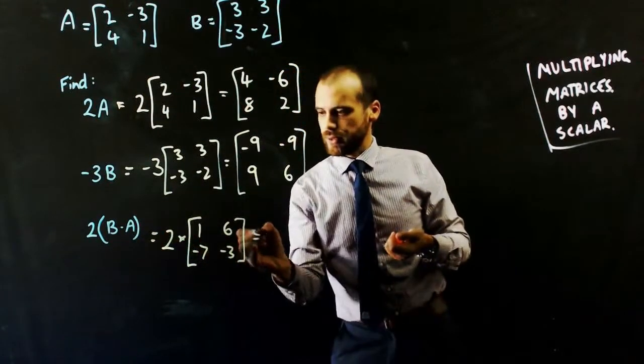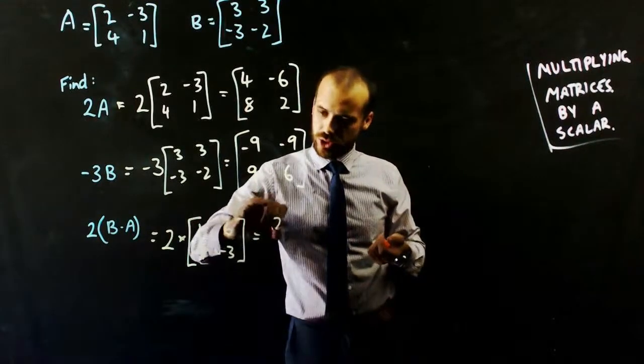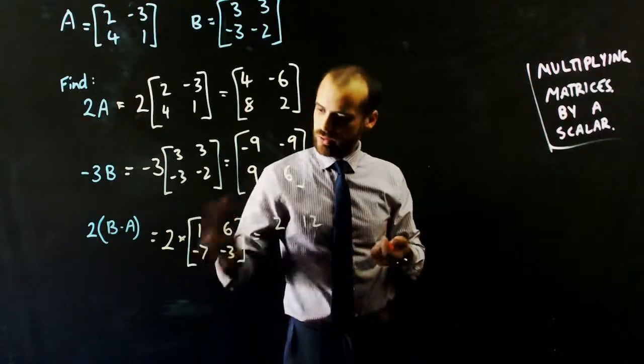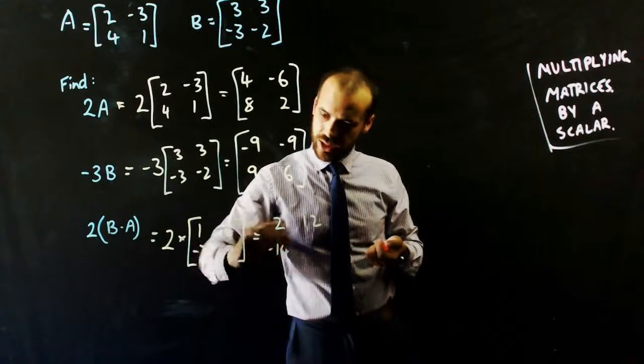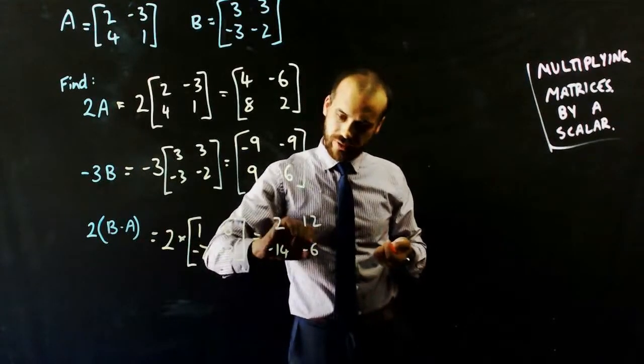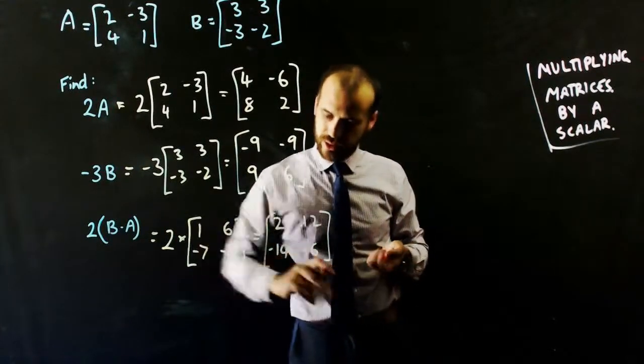So now you have 2 times that, which is 2 times 1 is 2, 2 times 6 is 12, 2 times negative 7 is negative 14, and 2 times negative 3 is negative 6.